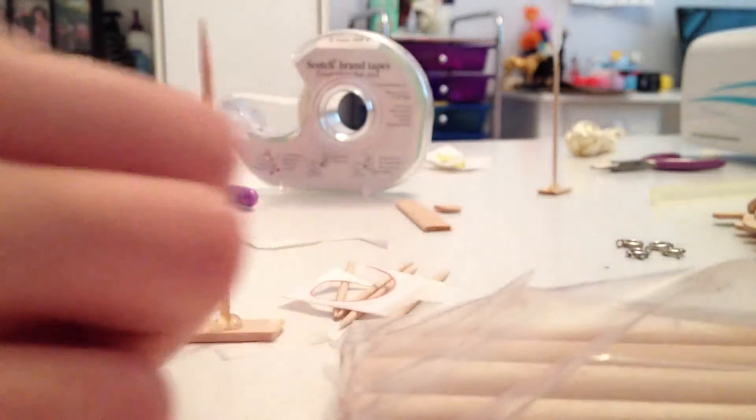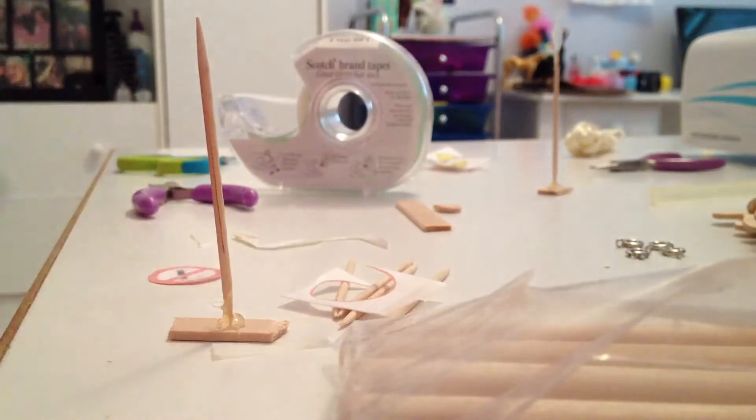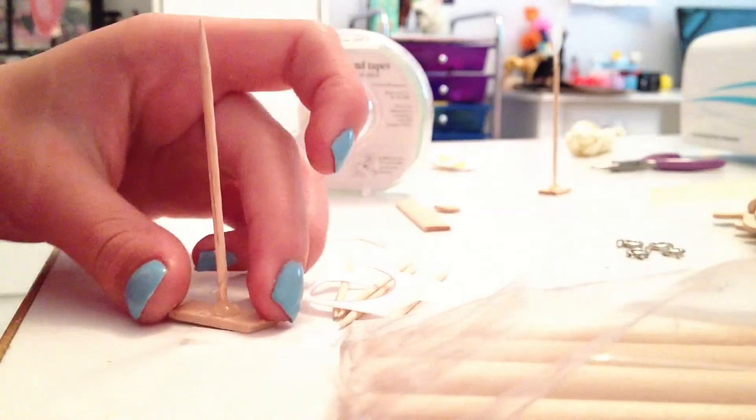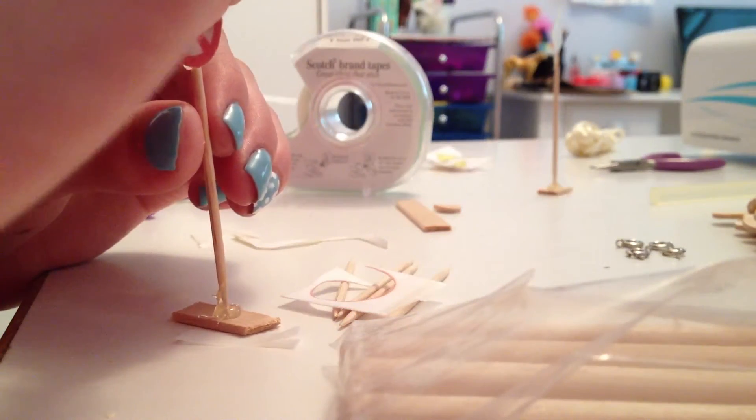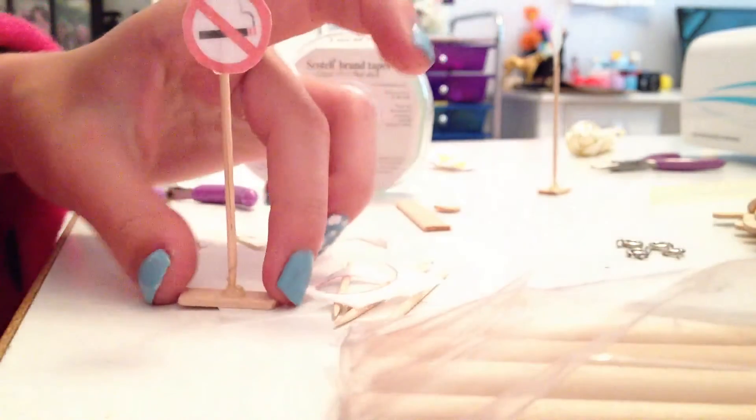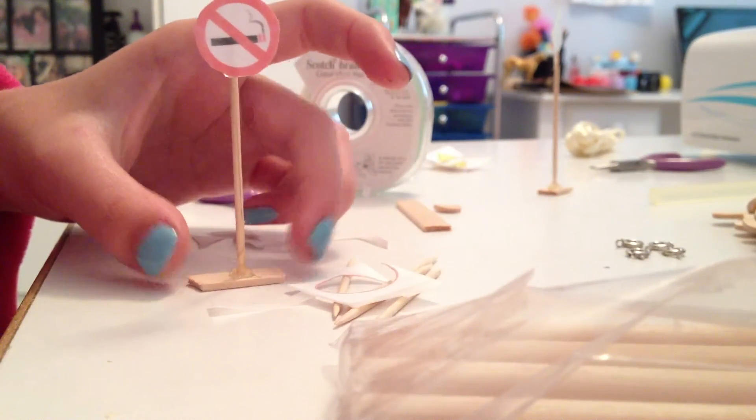Now, you are going to take your sign, and on the back side, glue a little dollop like that, and then bring it to your stand and stick it on there, and then voila! You have your finished product.